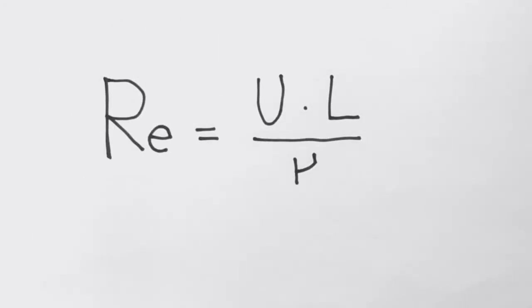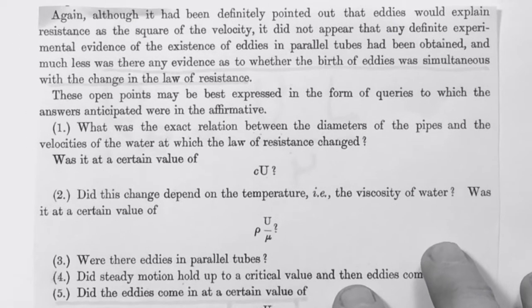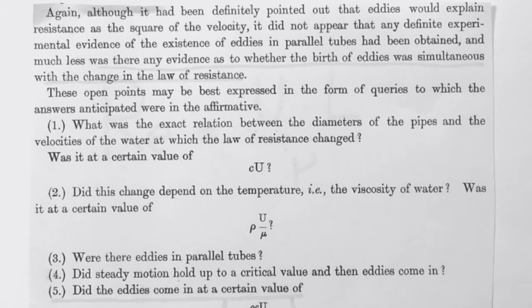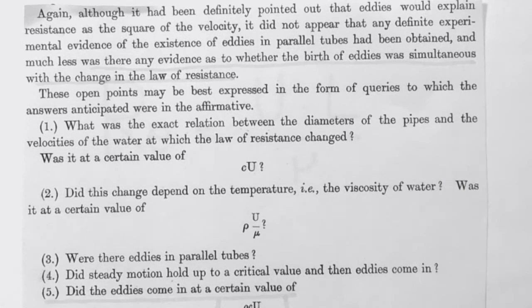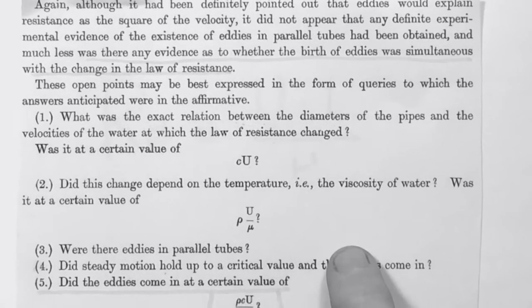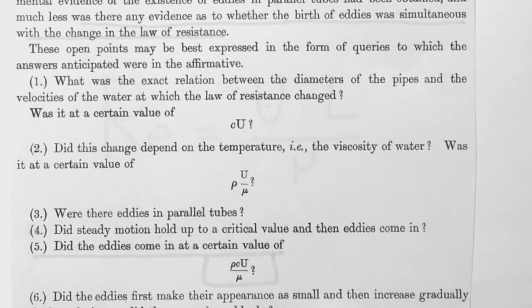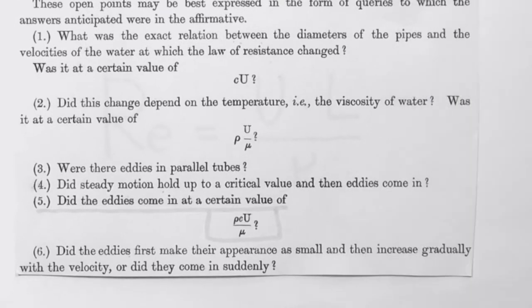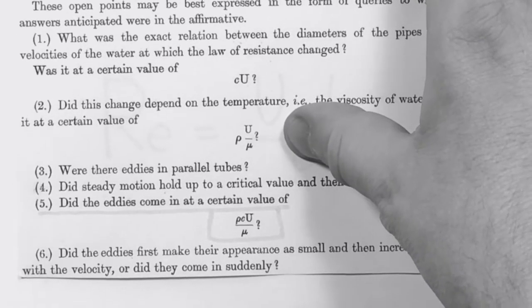Then two pages later he goes on and discusses a bit more about the birth of eddies. It's interesting because here, before going into the experimental part, he asks himself some questions, and these days it's not that common to write a paper like that. But you can see that he's wondering whether any of these quantities relate to the birth of eddies. And in point five, that's a key question. These eddies come in at a certain value of Reynolds number. This is quite interesting.